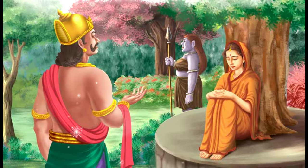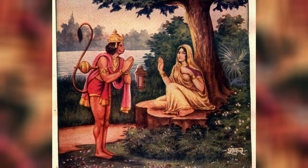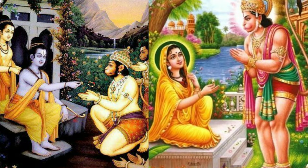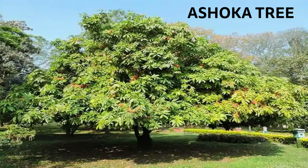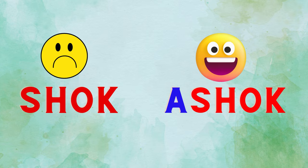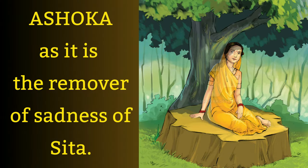It is the tree under which Sita spent her days after being abducted by Ravana. It is also the tree under which Sita meets Hanuman for the first time. Hanuman brings the news of Rama to Sita and offers her Rama's ring. In return, Sita gave Hanuman the Chudamani.